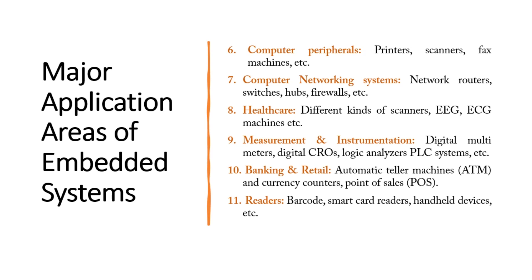In banking and retail: ATMs are the heart and soul of banking systems nowadays. Currency counters and POS (point of sales) terminals are also embedded systems. Inside a bank there are many embedded systems. Then you have card readers — used for micro SD cards and data transfer — barcode readers, handheld portable devices, and card swiping machines. All these can be categorized as embedded systems.